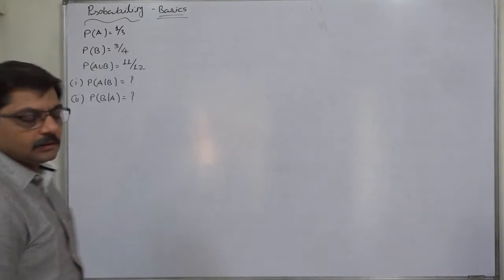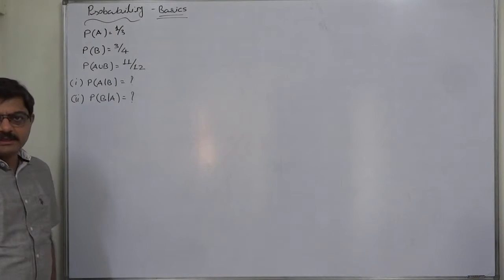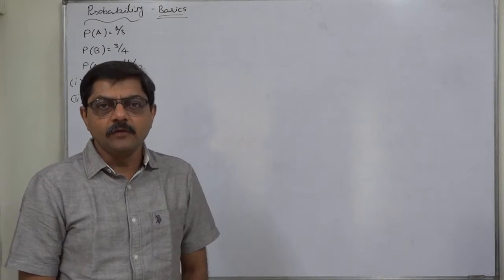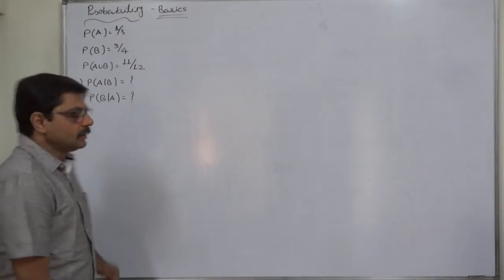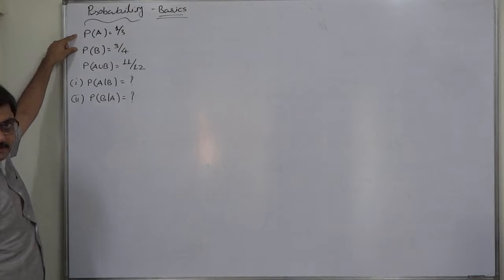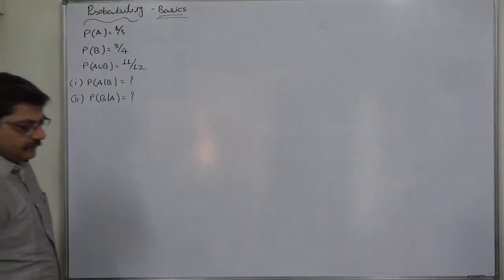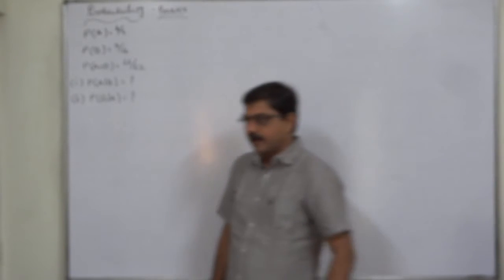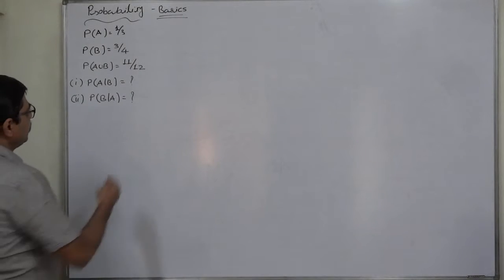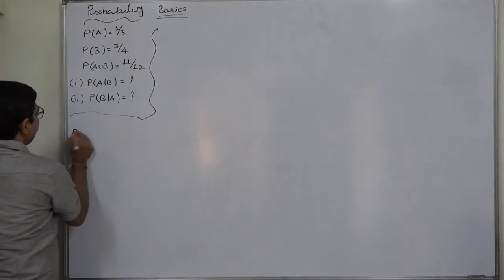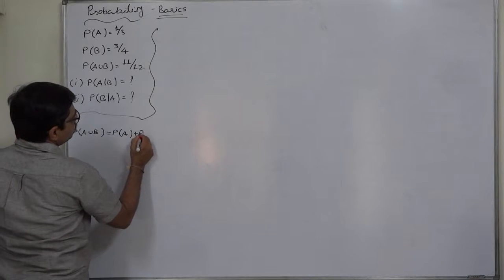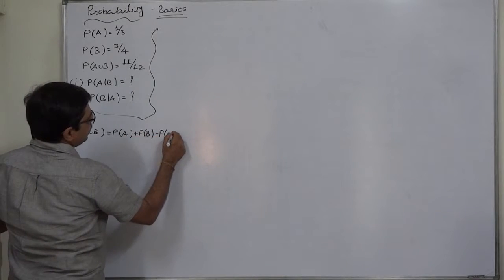To calculate conditional probabilities through the formula, first of all we should have the probability of intersection of the two events. To find P(A∩B), we can use the information available: P(A∪B) = P(A) + P(B) − P(A∩B).